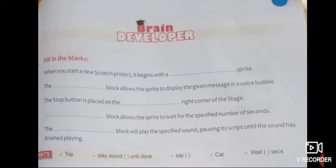Now, Brain Developer, fill in the blanks. When you start a new Scratch project, it begins with the cat sprite. The Say block allows the sprite to display the given message in a voice bubble. The stop button is placed on the top right corner of the stage. Wait Seconds block allows the sprite to wait for the specified number of seconds. The Play Sound Until Done block will play the specified sound, pausing its script until the sound has finished playing. Fill in your book. This Brain Developer.